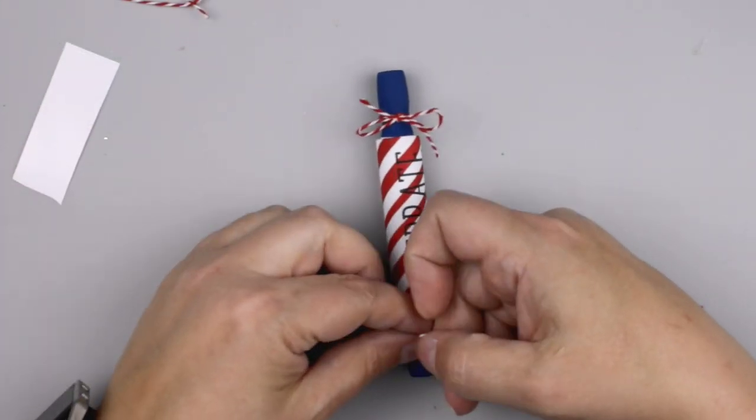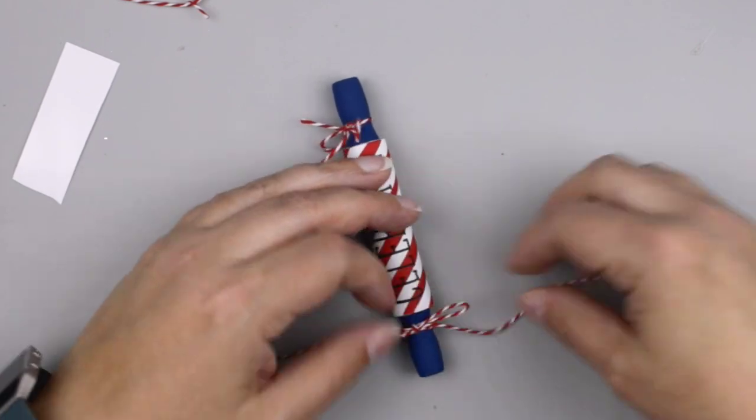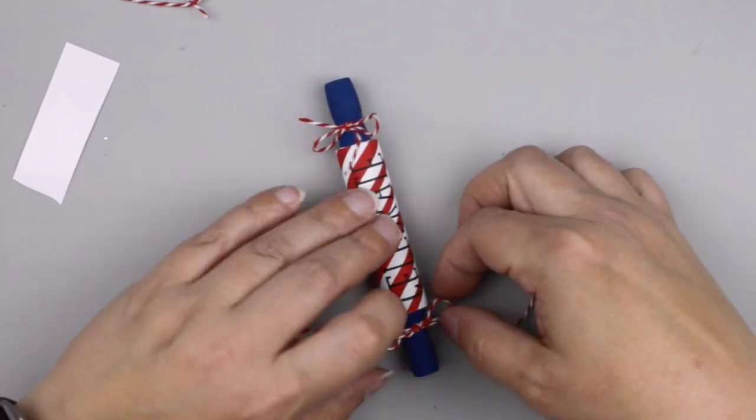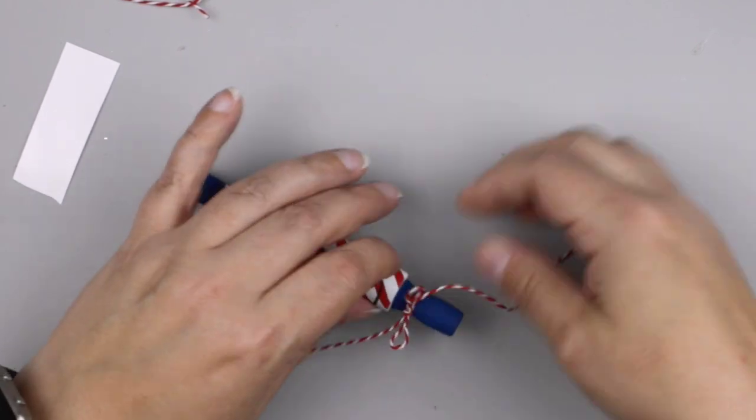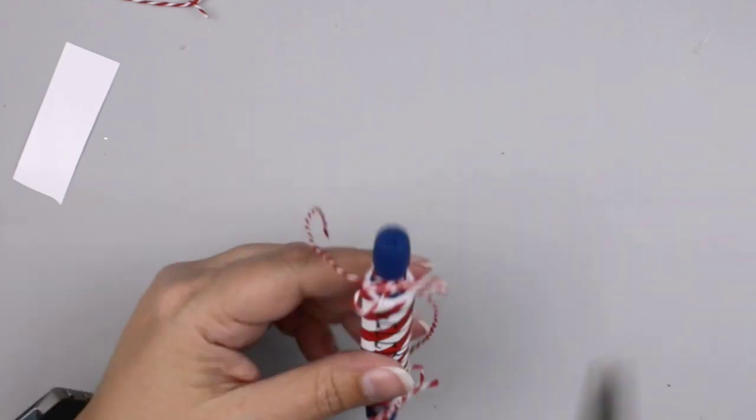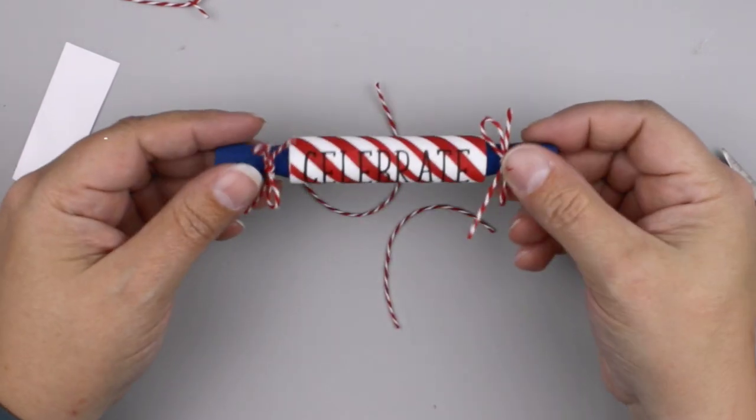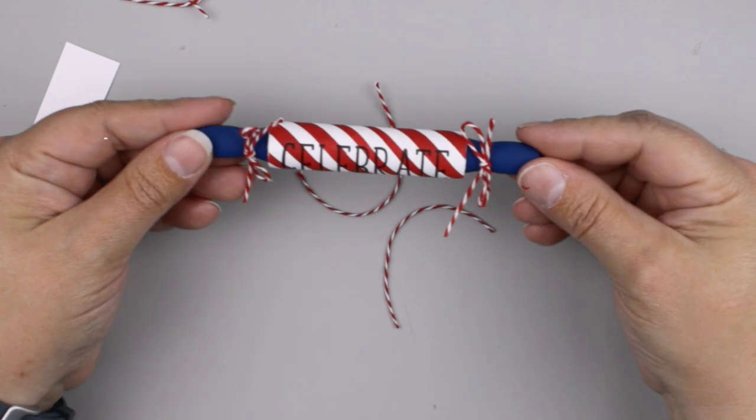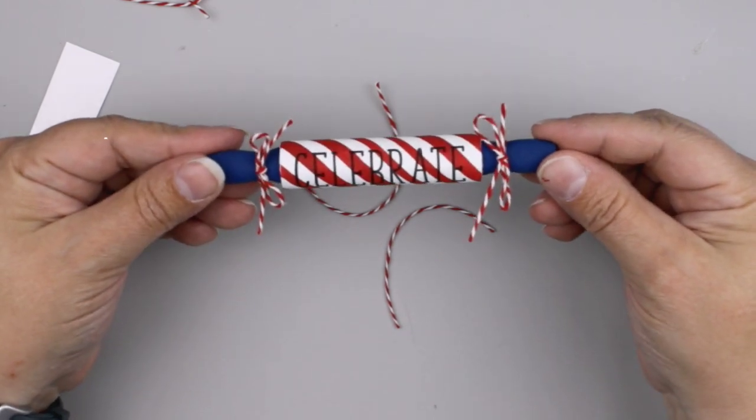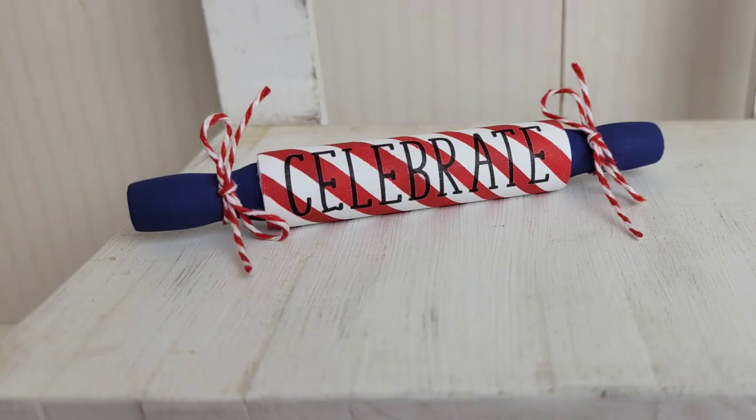Now every rolling pin needs a little bow at the end, some decoration. So I'm just using some red and white baker's twine to add some little bows right to the end of my rolling pin. And that's all there is to it. It's super cute and very easy to create.